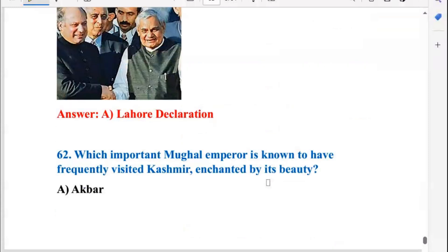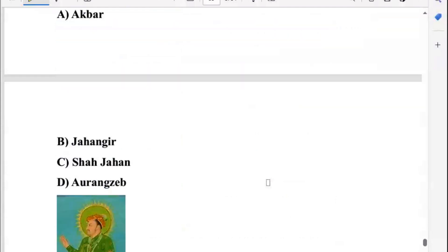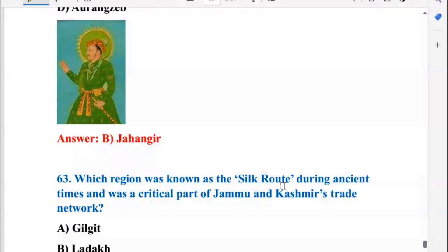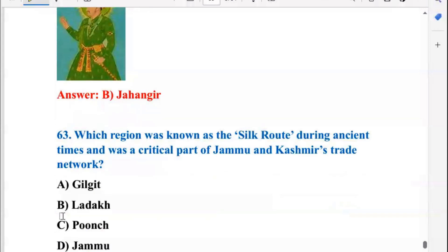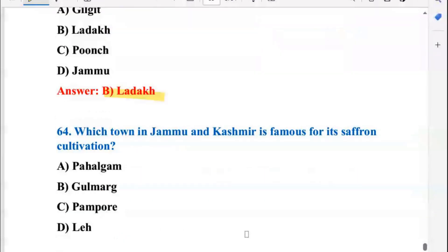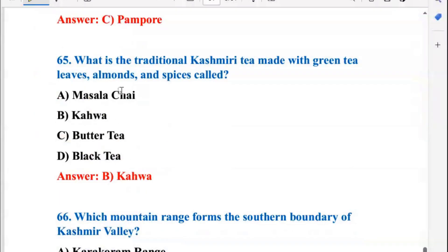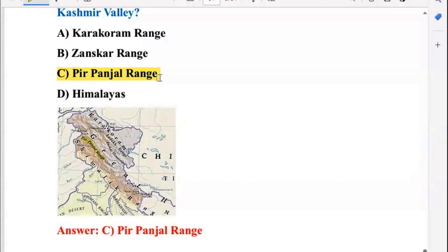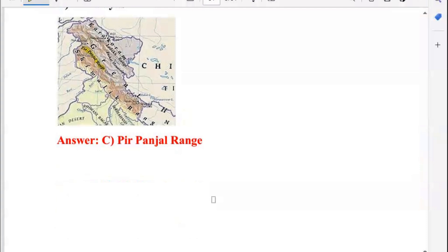Which important Mughal emperor is known to have frequently visited Kashmir, enchanted by its beauty? That is Jahangir, who also built Shalimar Bagh there. Which region was known as the Silk Route during ancient times and was a critical part of Jammu and Kashmir's trade network? That is Ladakh. Which town in Jammu and Kashmir is famous for its saffron cultivation? That is Pampore. Which mountain range forms the southern boundary of the Kashmir Valley? That is the Pir Panjal range, so C is the right answer. I hope you found this video useful — thanks for watching.